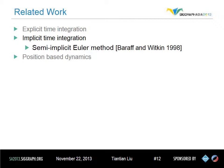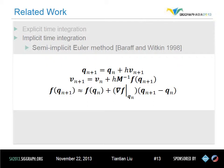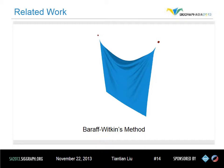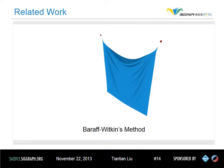Implicit Euler's method is the more stable time integration method. It also starts with the finite difference of Newton's second law, but now all the unknown quantities are on both sides of the equations. One well-known work, Baraff-Witkin's method, also known as semi-implicit Euler's method, linearizes the force at q_n, and is essentially one iteration of Newton's method. This method works very well and is very stable, but it is generally slow because it needs to solve a time-varying linear system every frame.